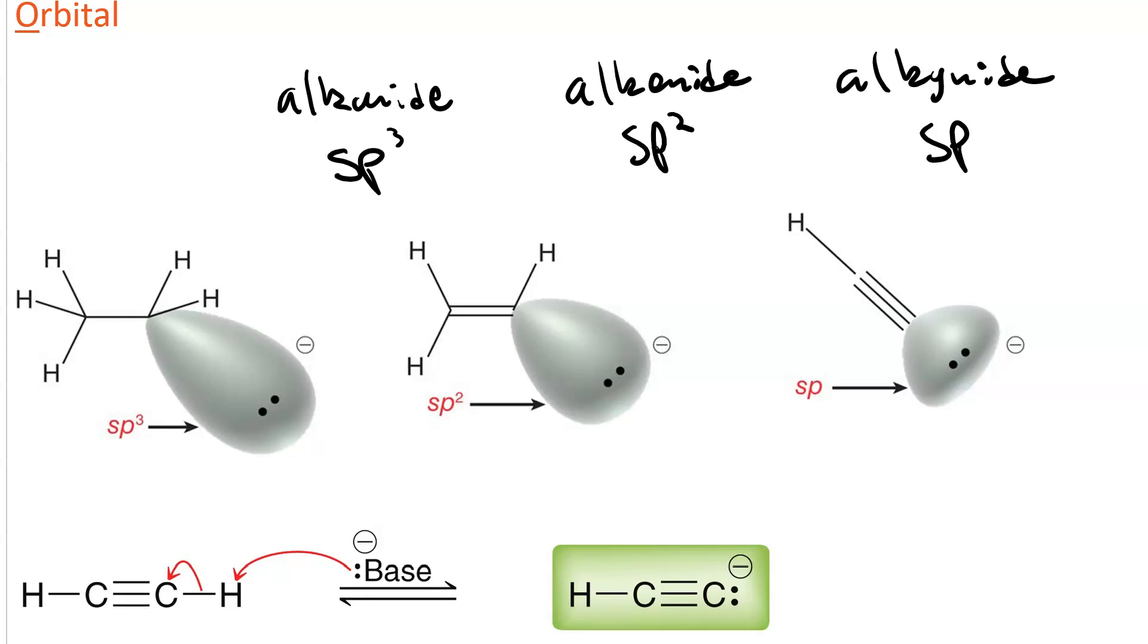That shorter distance between the positive charge on the nucleus and the negative charge on the lone pair stabilizes the negative charge. Hence, there are bases strong enough to deprotonate an alkyne to make the alkynide ion. In this case, acetylide.